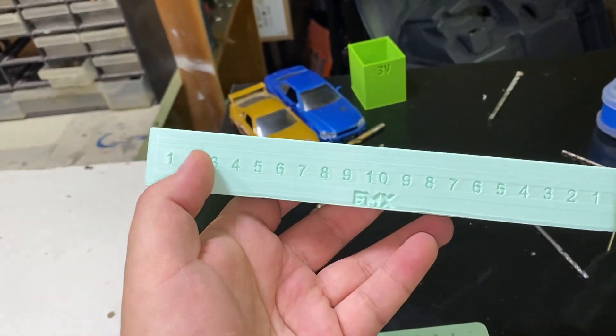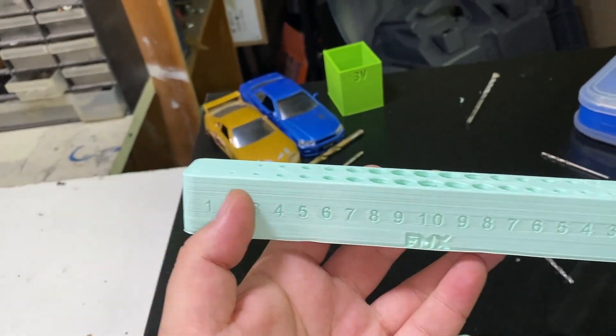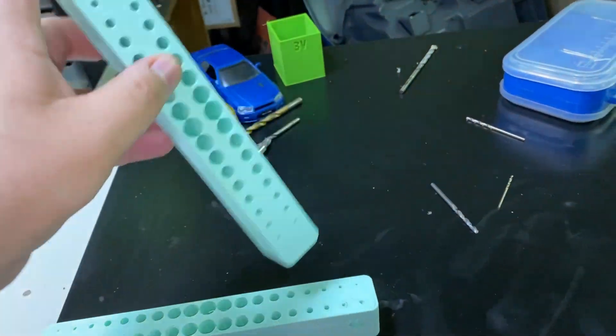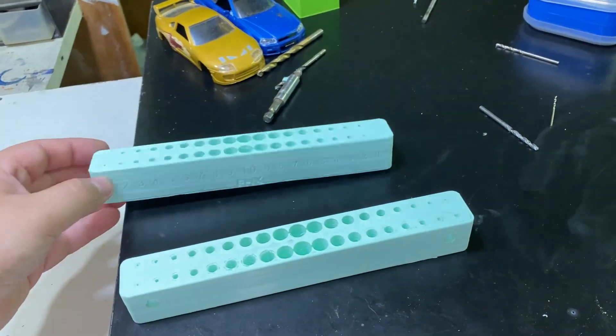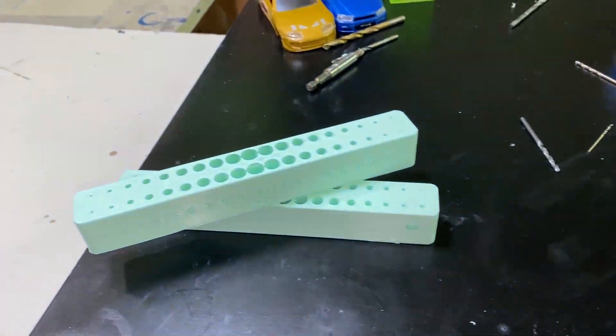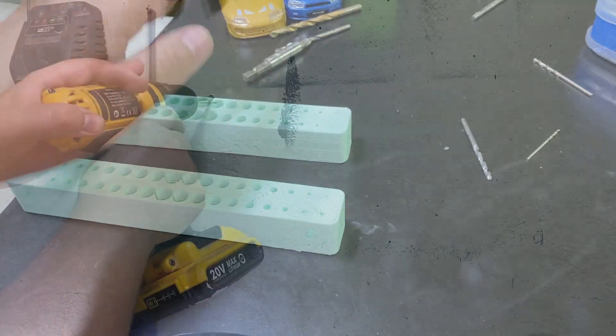It should fit most drill bit sizes. Even if you have an odd number, like two and a half millimeters, you can still put it in that three millimeter hole. I made two of them. So I'm gonna hang them and we're gonna organize some of the drill bits. Let's do that now and see if that looks good.